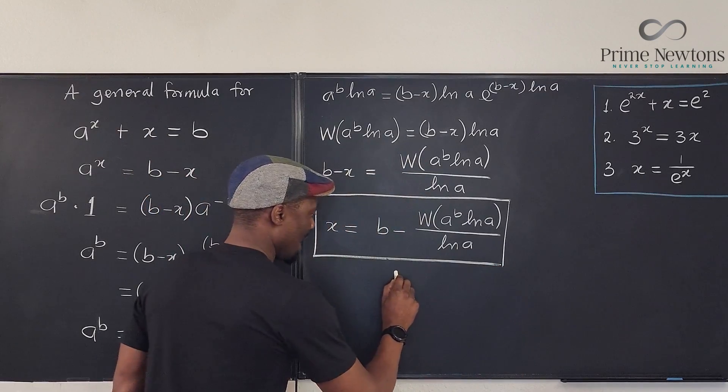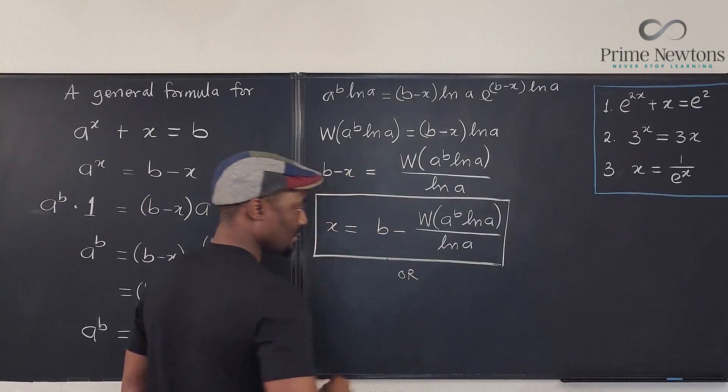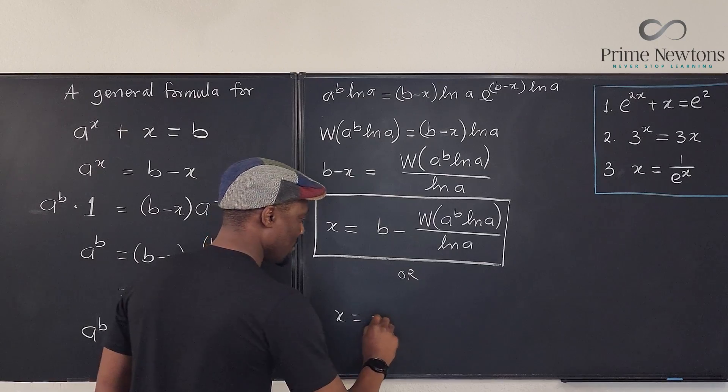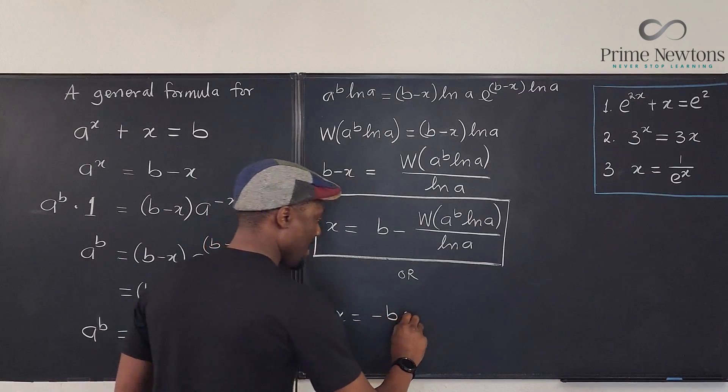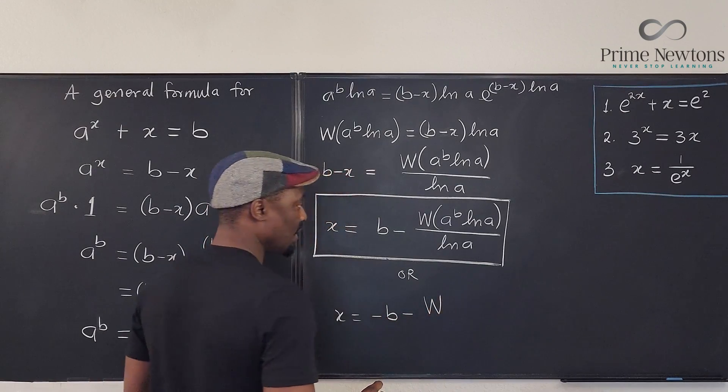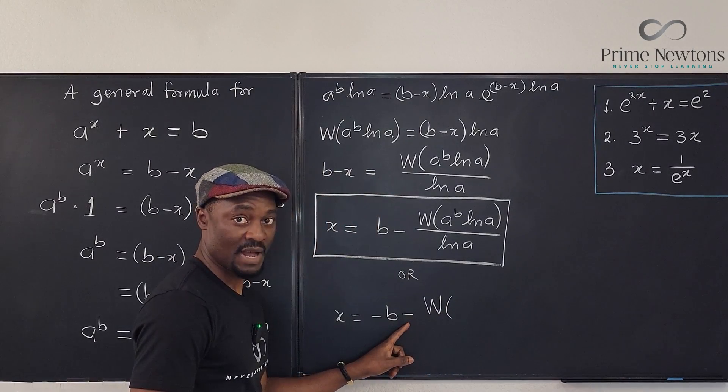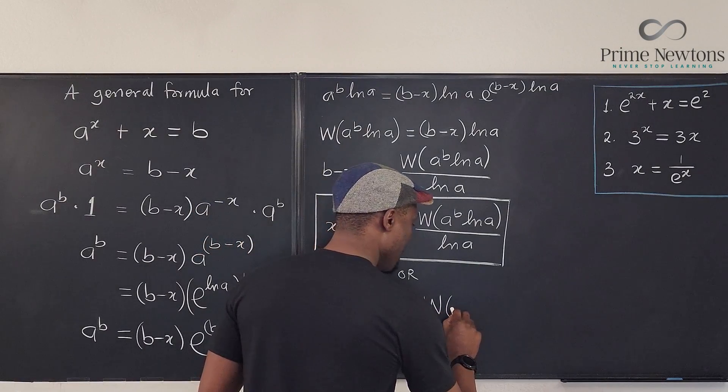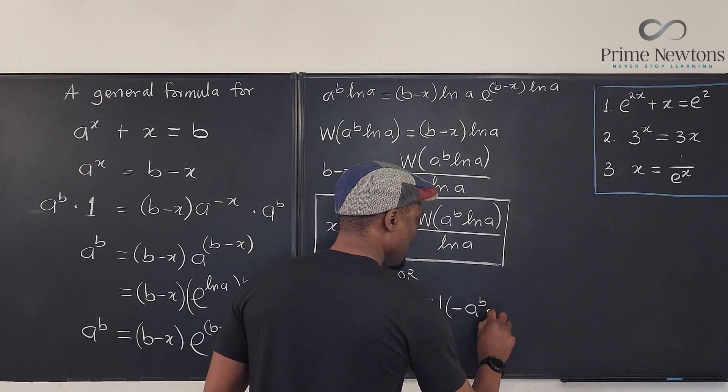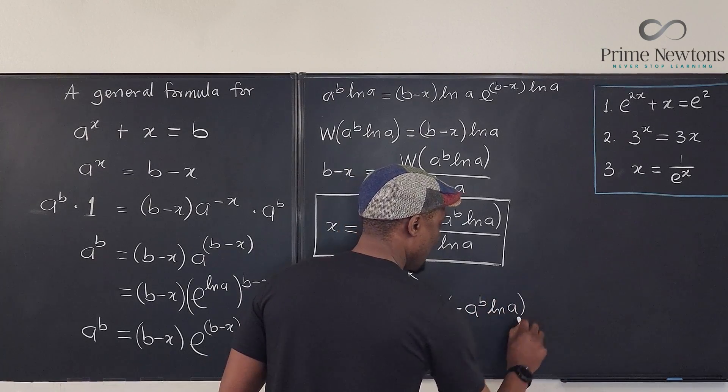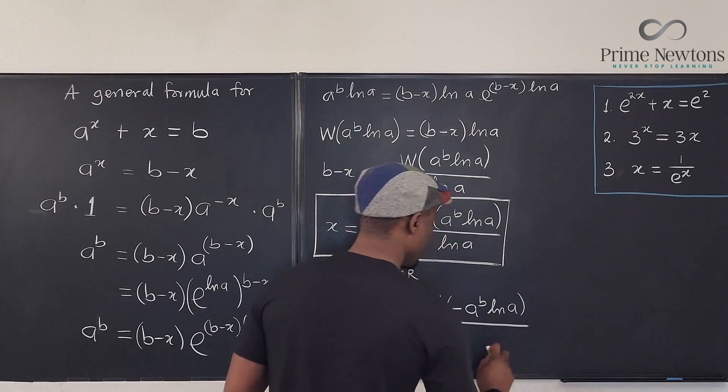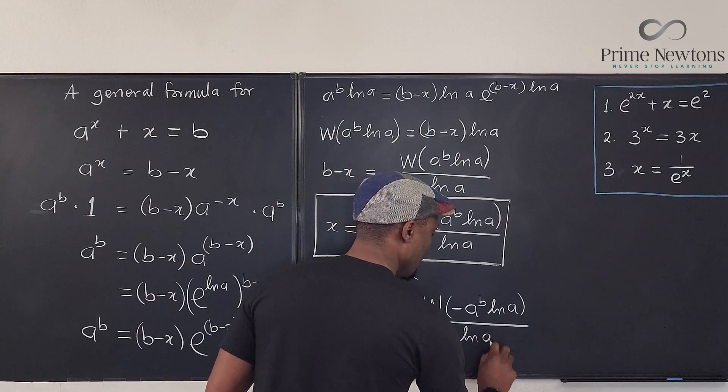Or you can say x is equal to minus b minus the w of, this doesn't change to plus. It is still minus. Of negative a to the b ln of a. That's the other thing that takes up a minus. Natural log of a.